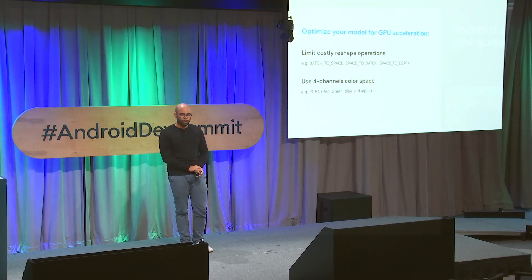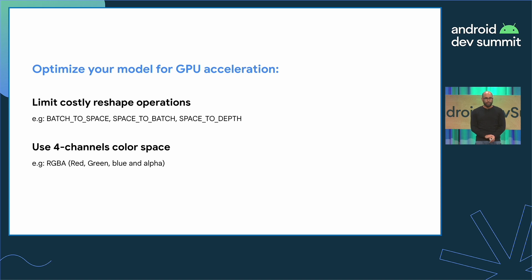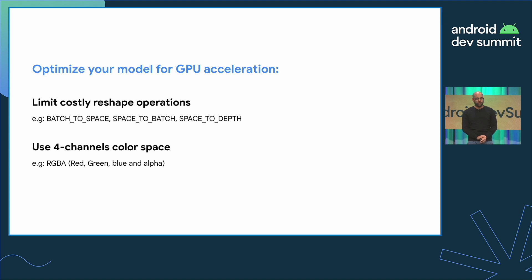The second step is to avoid certain operations. Reshape operations like Batch to Space are quick on CPU but particularly expensive on GPU — you probably want to avoid using them. Also keep in mind that GPUs are designed to process images and textures using RGBA, coded on four channels (red, green, blue, and alpha). So if your model uses four-dimension tensors as input, it will be significantly faster on GPU. You can learn more about how to optimize your model in the TensorFlow Lite documentation.